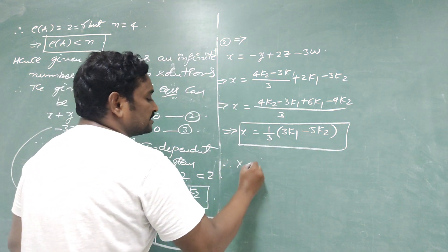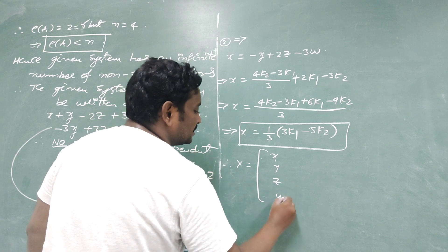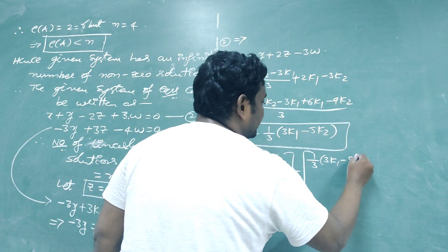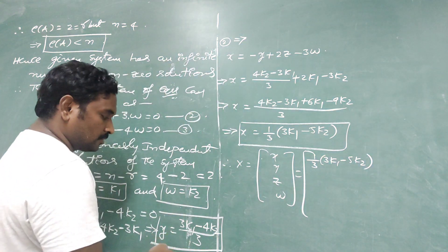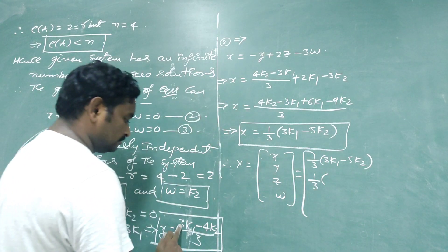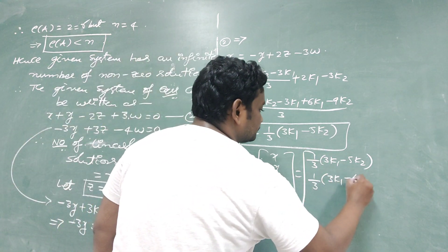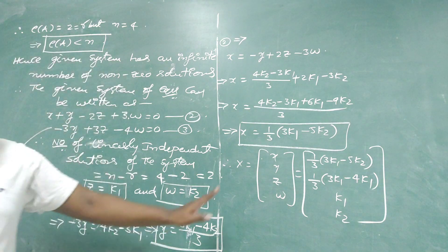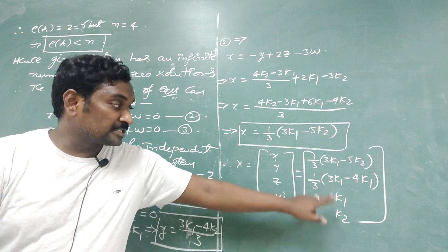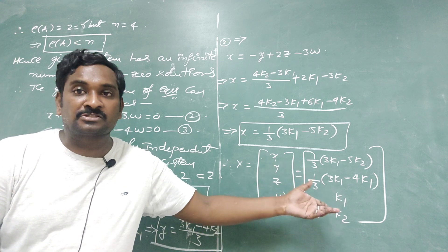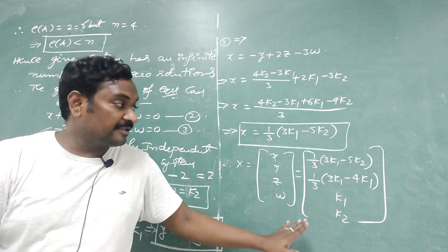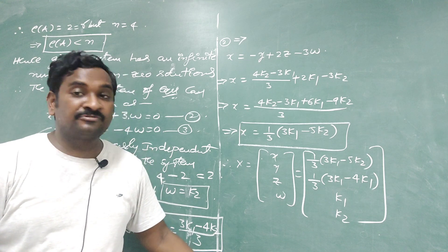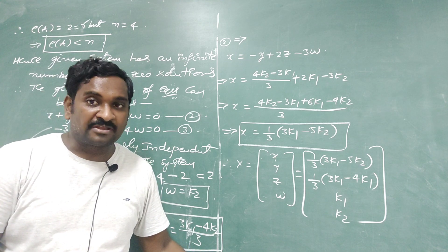Finally, the general solution is: X = (3K1 - 5K2)/3, Y = (3K1 - 4K2)/3, Z = K1, W = K2. This is the general solution because it contains two parameters K1 and K2. By giving different values to K1 and K2, the system has an infinite number of solutions. In the next video, more examples on solving systems of equations will be presented.